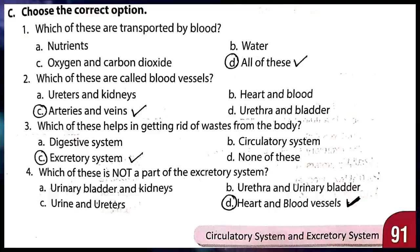Second — which of these are called blood vessels? Options: ureters and kidneys; heart and blood; arteries and veins; ureter and bladder. Correct answer is C — arteries and veins. Arteries और veins blood vessels हैं — blue color की thin tubes को veins कहते हैं, red color की को arteries कहते हैं।